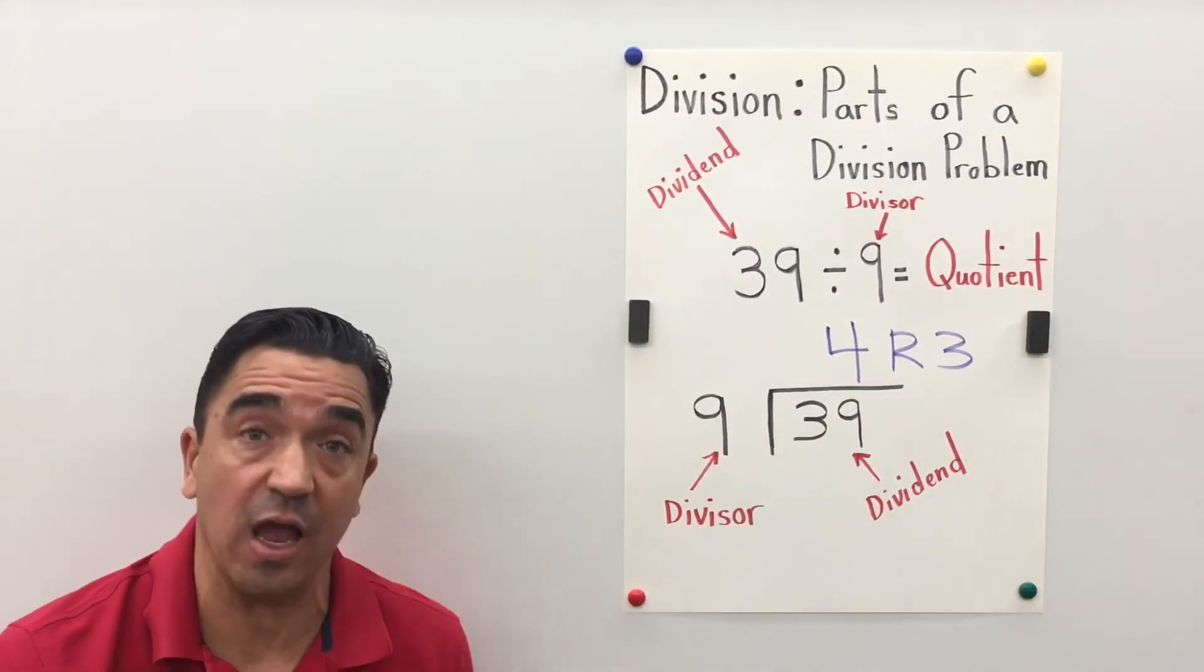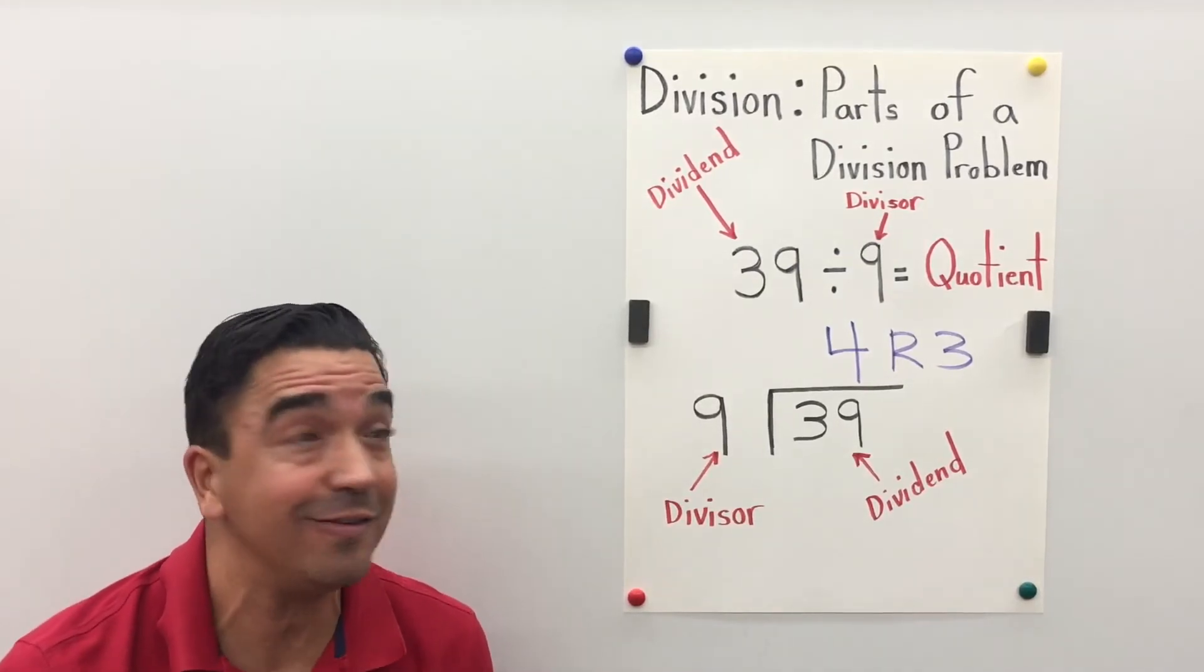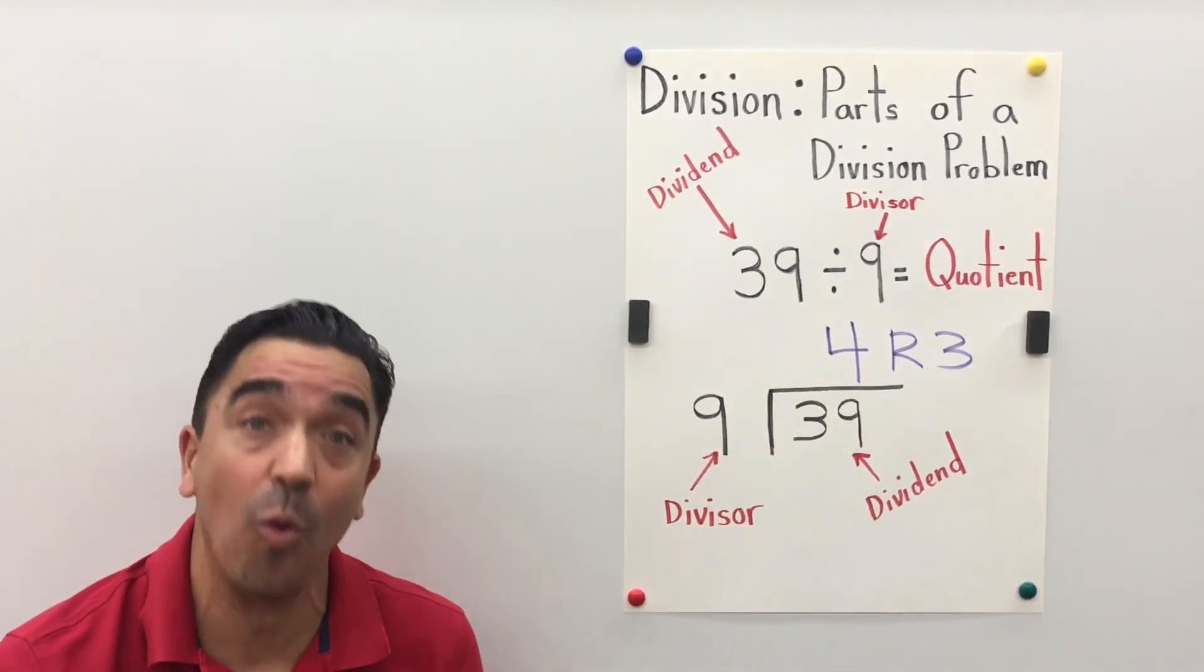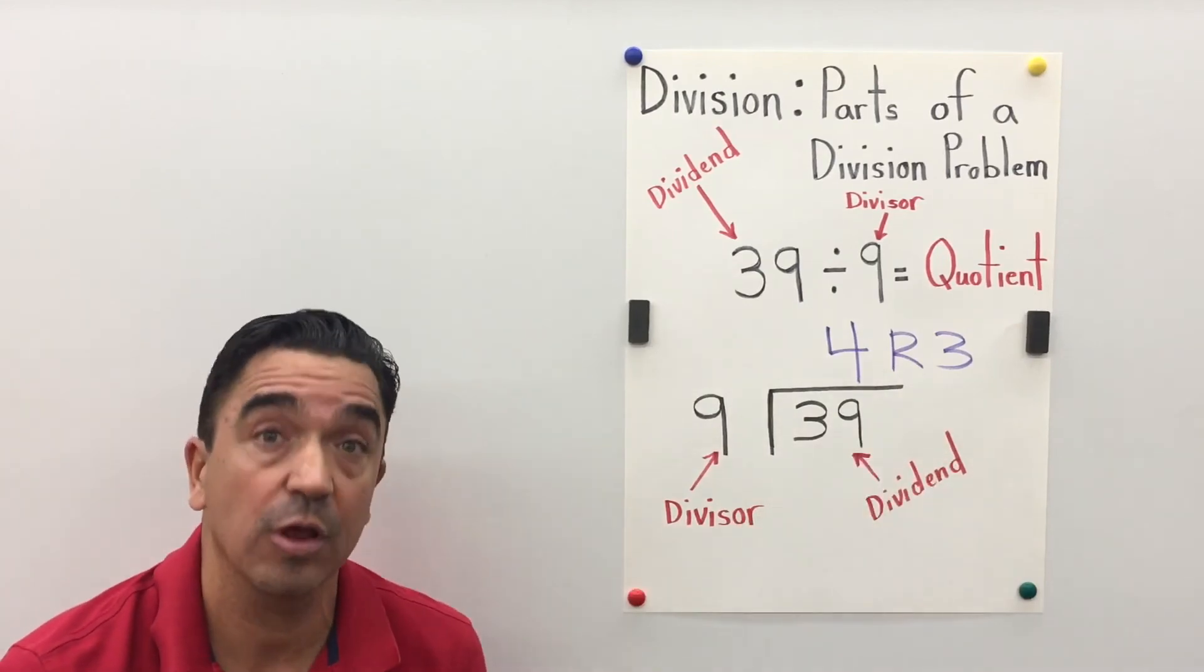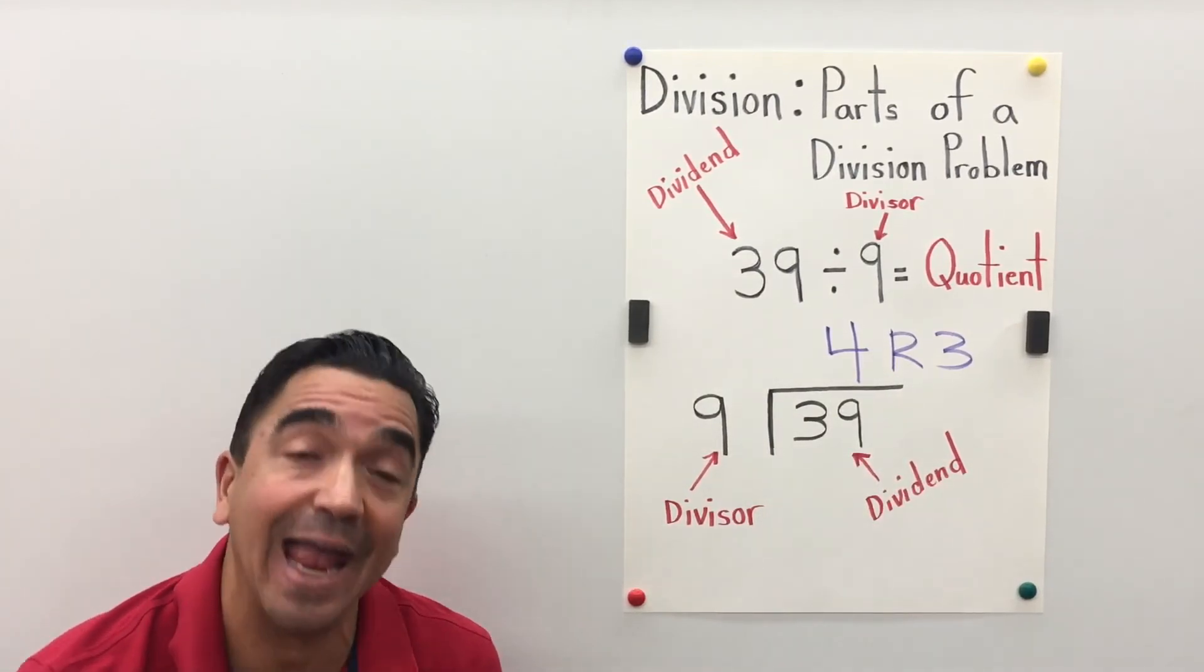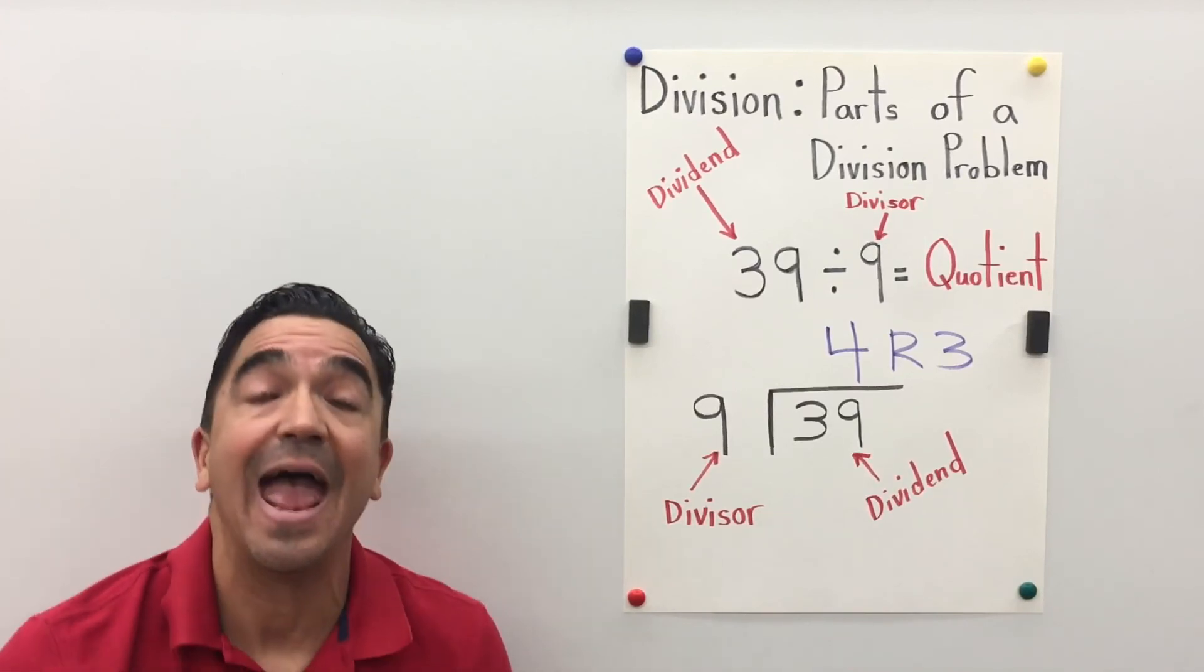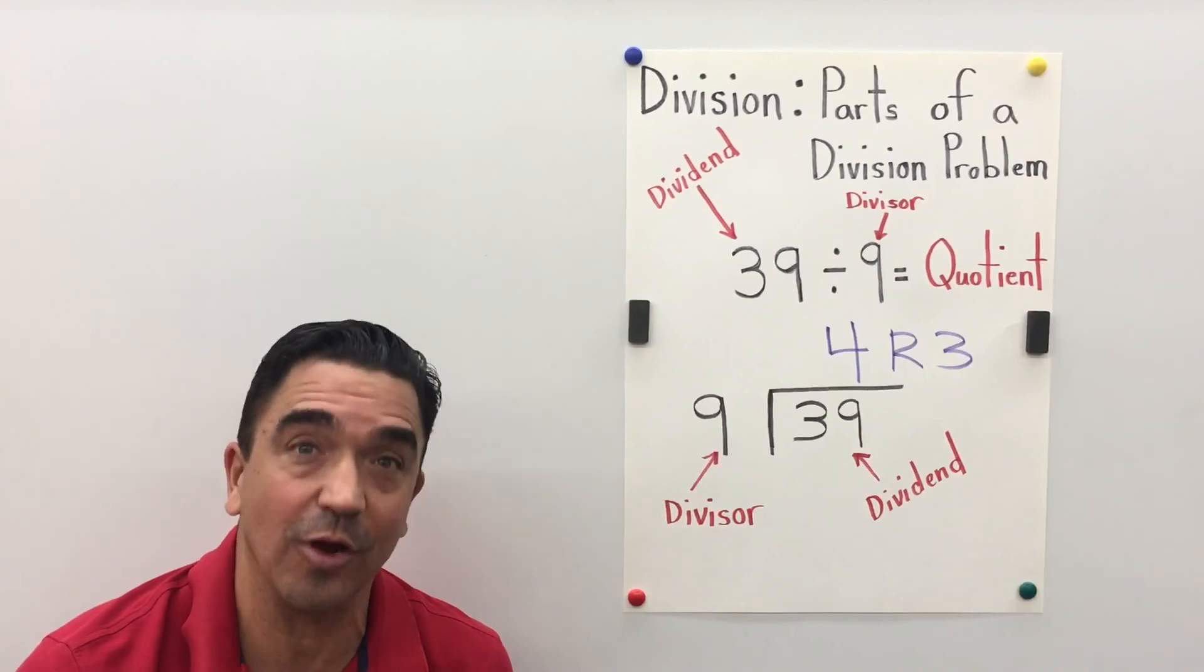So 39 divided by 9 gives us a quotient of 4 remainder 3. And don't forget, the quotient is the answer to a division problem. And that concludes our lesson.